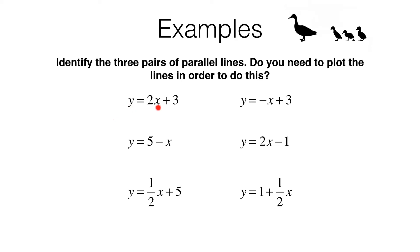Looking at the first equation you'll see that we've got y equals 2x plus 3. So that means it's got a y-intercept of 3 but more importantly a gradient of 2. Now is there another line here that has a gradient of 2? Yes it's this one. y equals 2x minus 1. It's got a gradient of 2 and that means these two are parallel to each other.